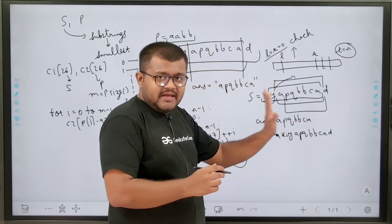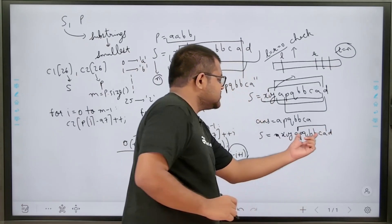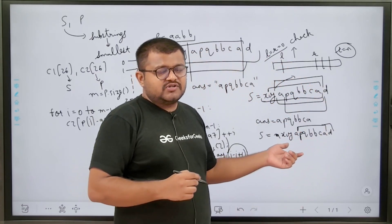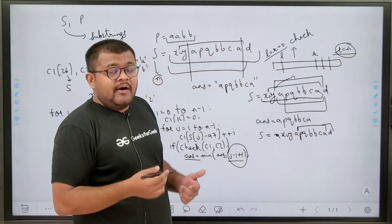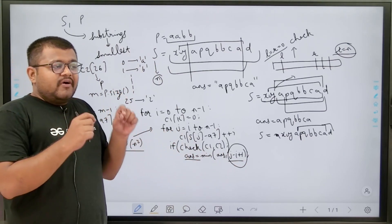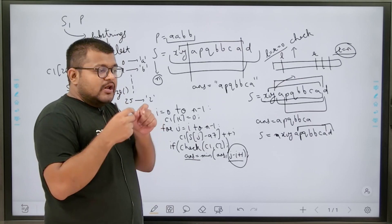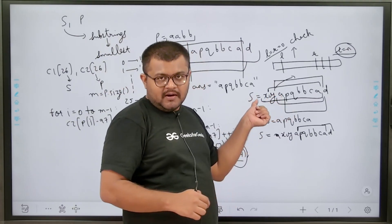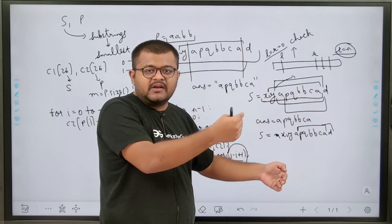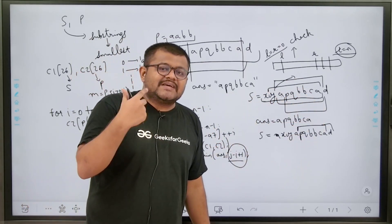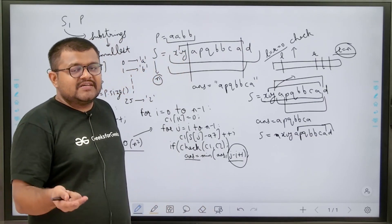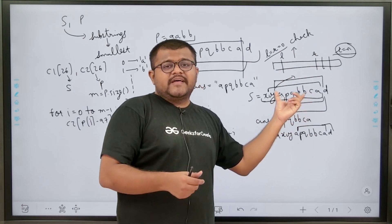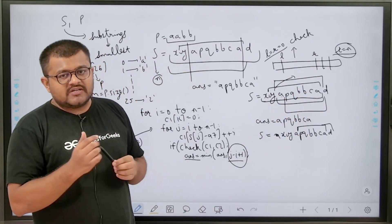After this substring, we again increment L. The new substring does not contain all the characters of P, so we increment R. This also does not contain all characters. Then R becomes N and we terminate the process. Regarding time complexity: both L and R will loop over all indexes at most once — they only move right and never repeat. So with effectively two passes, the time complexity is O(N). Whenever the check condition returns true and the substring length is less than our current answer, we store that substring.